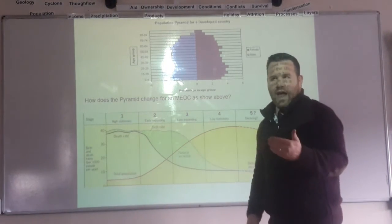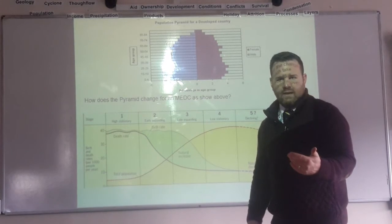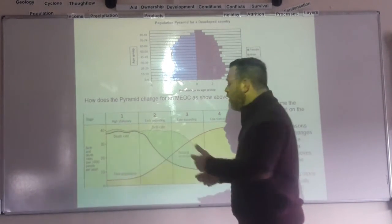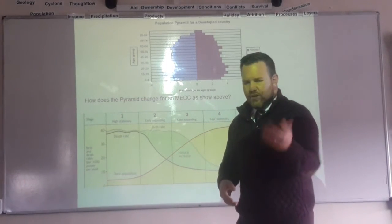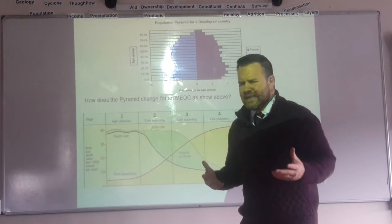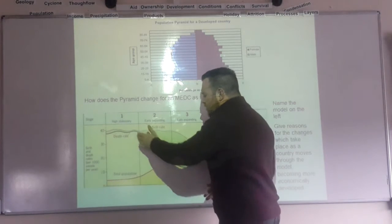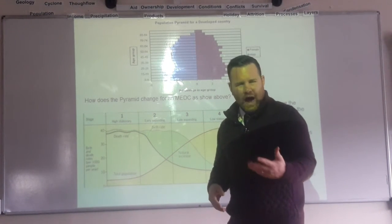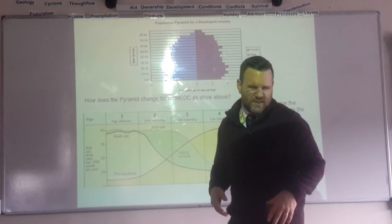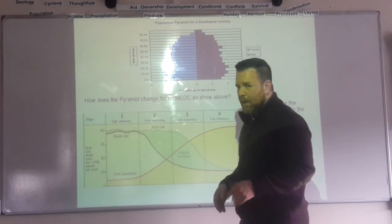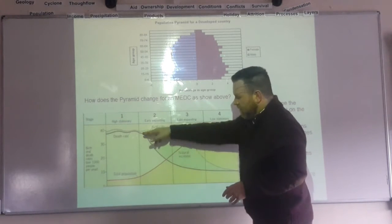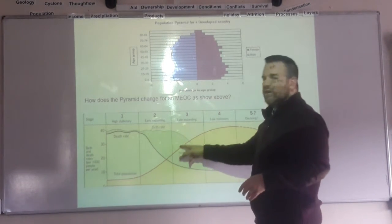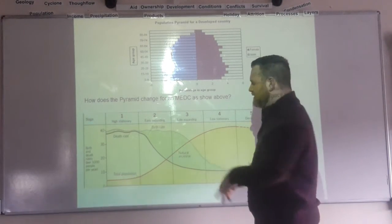As a country begins to develop through stages two and three, the first thing that happens is investment in medical care, so fewer people die because they can get cures for diseases. Or you start to get better diets, so fewer people die because they're eating better. You get an improvement in standard of living — people live in cleaner, more hygienic conditions, reducing the risk of disease. So your death rate starts to go down in stage two. Because the death rate is dropping and the birth rate stays the same, the population starts to increase.